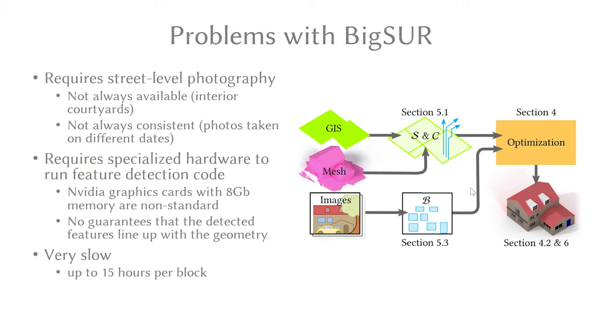We can see the complicated Big Sur pipeline here on the right, and what we want to do is to remove the image branch at the bottom of this diagram, in order to simplify the technique. Finally, Big Sur was very slow, it took up to 15 hours to process each block, and we wish to improve that in this system.